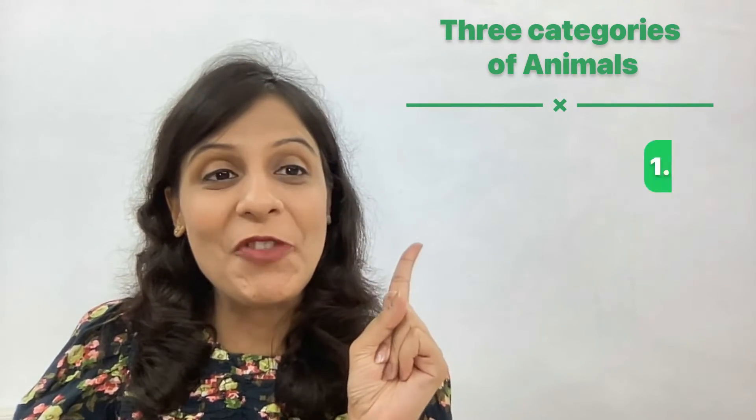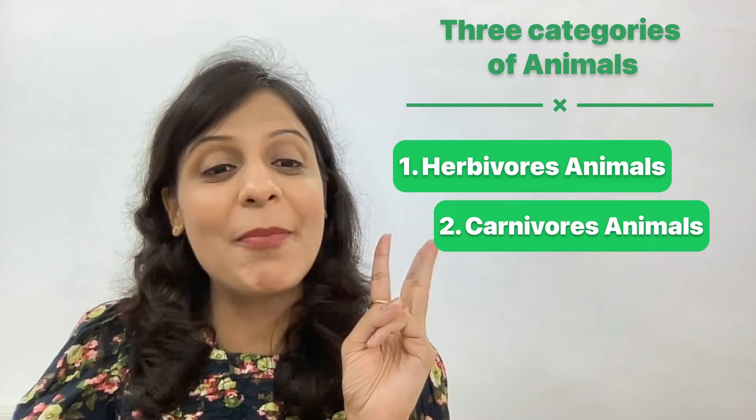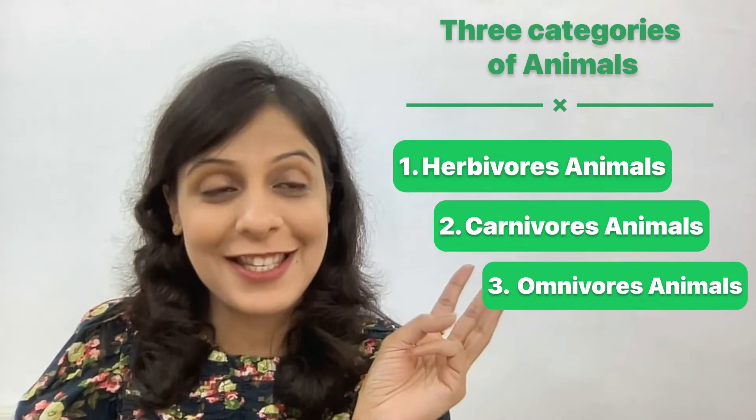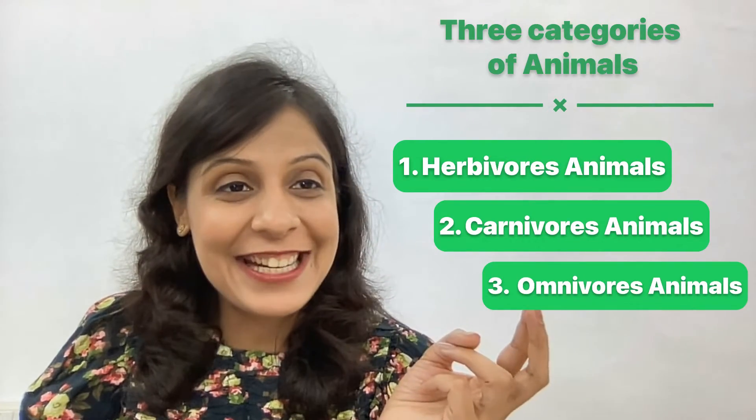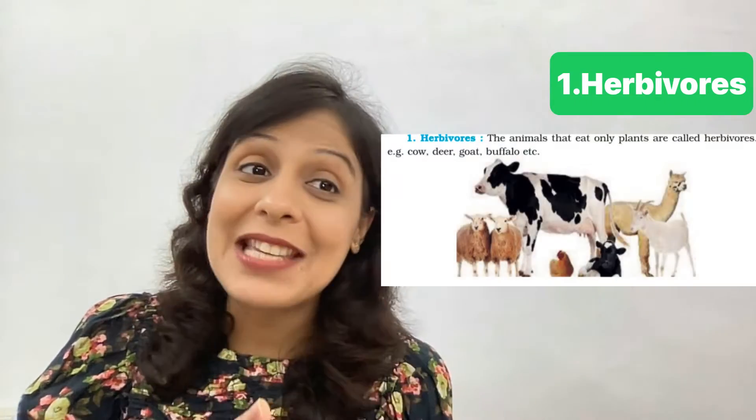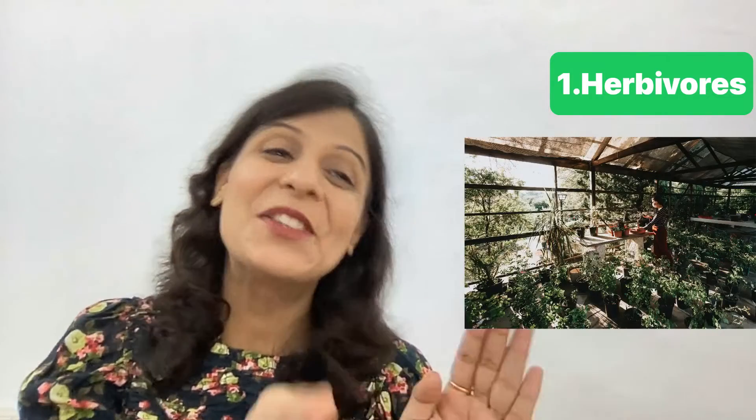First, Herbivores. You can remember herbivores are related to herbs, which we get from plants. Herbivores are those animals that eat only from plants or trees. They don't eat meat, so they eat only plants. That's why they are called herbivores — like cow, deer, goat, and buffalo.